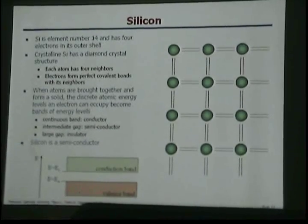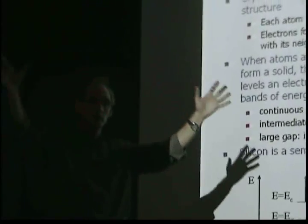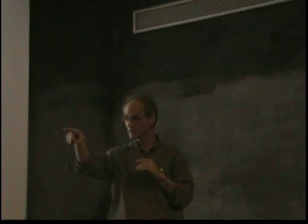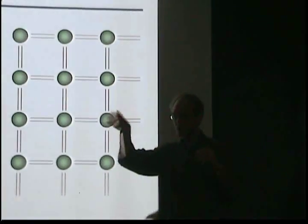You all know the shell structure of an atom — electrons circle around the atom and they can occupy specific shells. Now, if I take two atoms and bring them together, what happens to those shells? The discrete energy levels split, and when I bring a whole bunch of atoms together, I get bands of energy. Depending on what element it is, these bands of energies have a very particular structure.